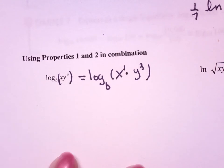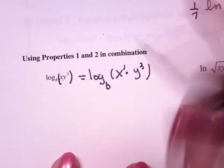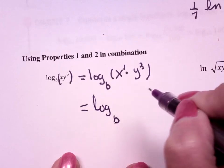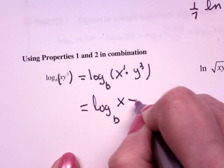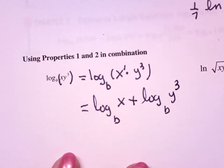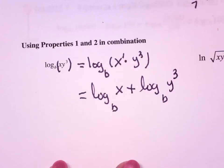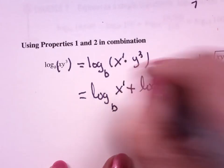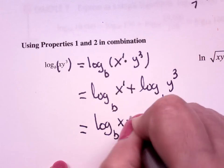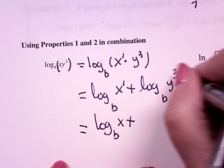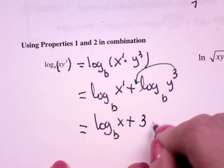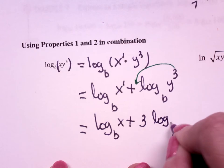Thank you. So a product turns into a sum, so log base b of x plus log base b of y cubed. This is to the 1 power, so that's done. And then here, it's got an exponent, I can bring it down in front. So this is 3 log base b of y.